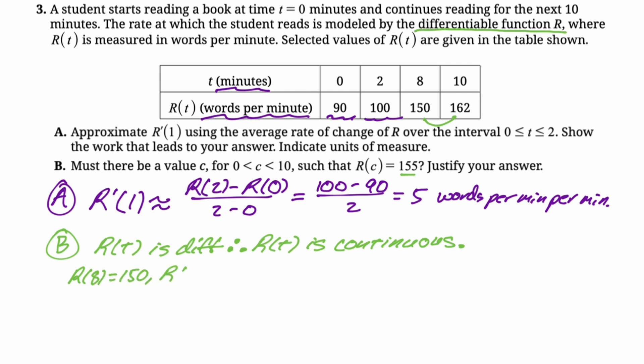I'm going to say that r of 10 is 162. Now I'm going to dive into the intermediate value theorem stuff. So I'm going to say, since r of 8 is less than 155 is less than r of 10.